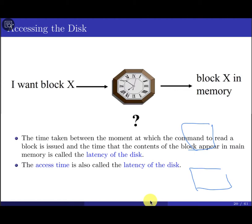We define access time as seek time plus rotational delay plus transfer time — and this is completely different when you compare access time for a hard disk versus an SSD. For the SSD, it's like a big flash memory, so we don't have the mechanical characteristics associated with the hard disk. But the principle is the same: data is stored on disk or SSD and we need to fetch it into main memory, where access is much faster.